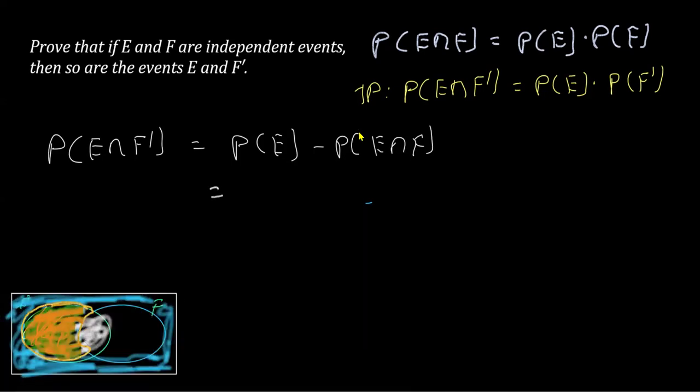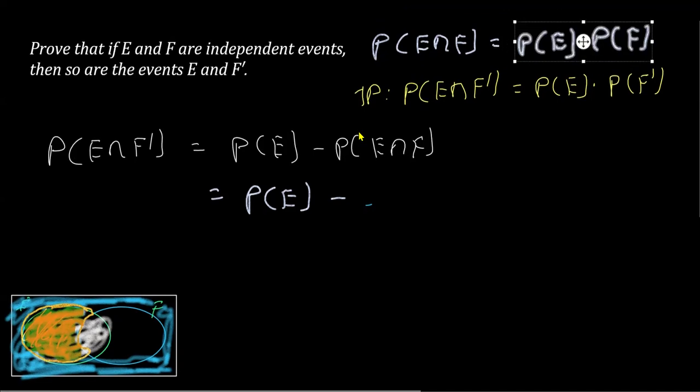Now what I can do here, I can keep P(E) as P(E), and from here, what is P(E intersection F)? From here you can see that P(E intersection F) can be substituted with this.